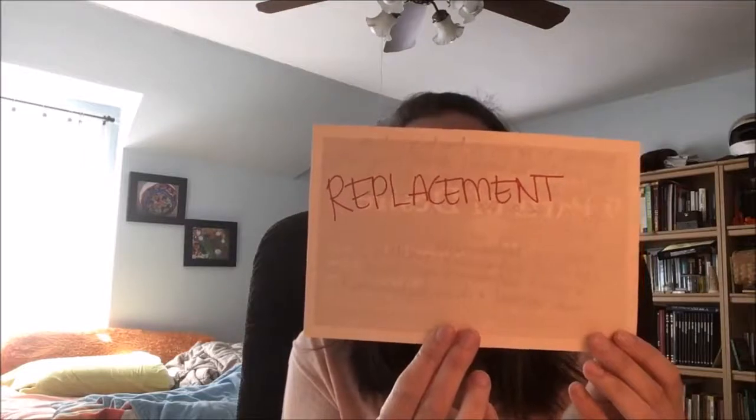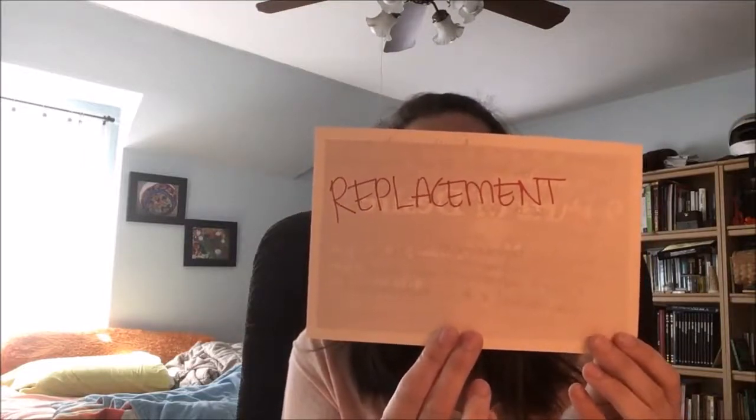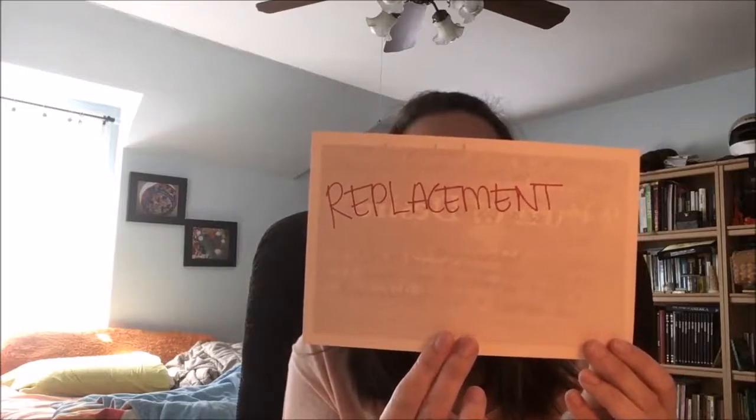The next root operation is replacement — putting in or on a biological or synthetic material that physically takes the place and/or function of all or a portion of a body part. Unlike insertion, where the device helps the body part, with replacement the device takes the place of the entire body part. Examples include a total hip replacement, where a prosthesis takes the place of the joint or bone.